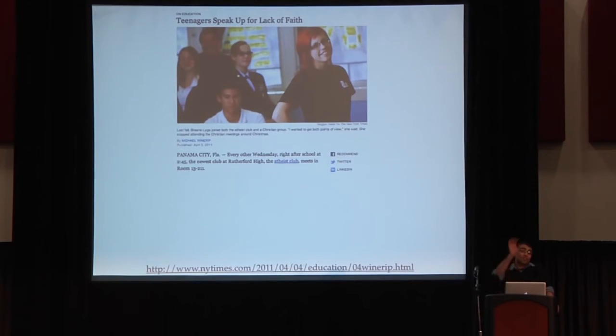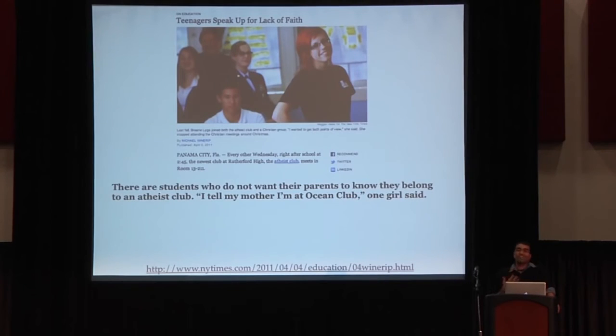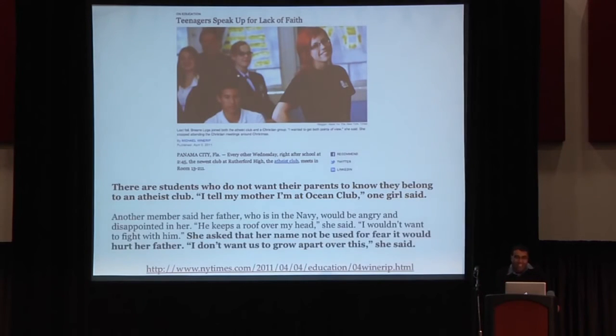And what's the kicker here is you read this wonderful article about this group and why they were formed and what they do there. And at the very end, there's a couple heartbreaking lines. One of them is from a girl whose parents can't find out where she is after school. So she tells her mother, I'm at Ocean Club. She has to lie about where she is just so she can talk about religion in an open forum where she's not censored. Fellowship of Christian Athletes don't have to do that. I guarantee it. And this is one other girl whose dad is in the Navy and she didn't want to upset him. She asked that her name not be used for fear that it would hurt her father. I don't want us to grow apart over this. And this, again, how can you read that and not feel for these students? And again, what are they doing? They're showing up to discuss religious beliefs. They're not doing anything bad.